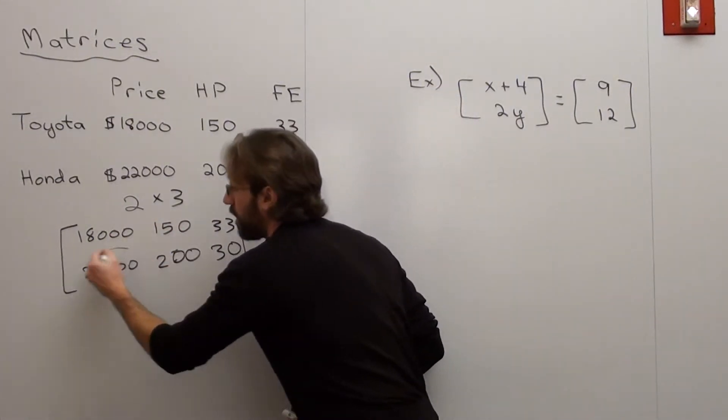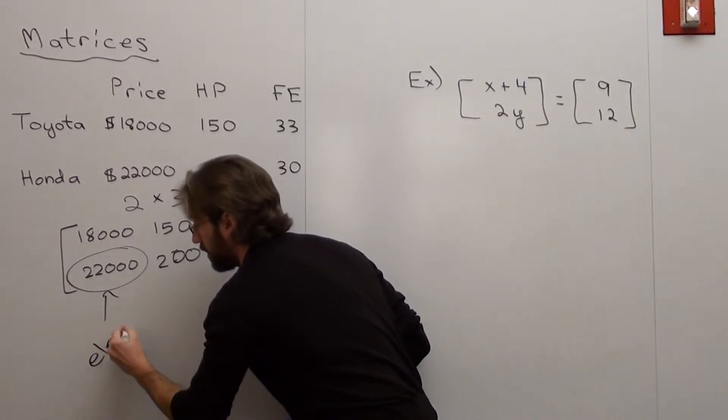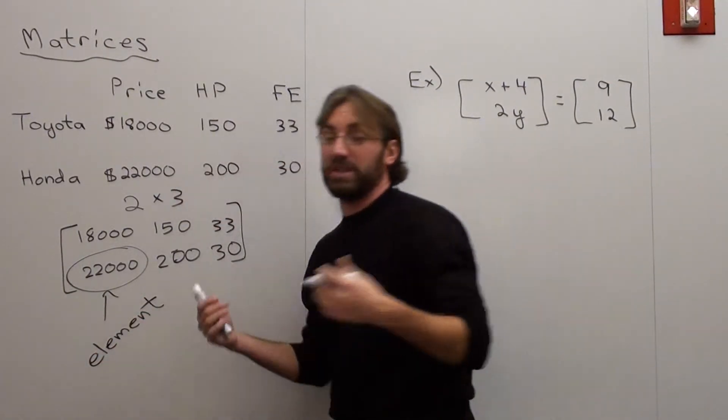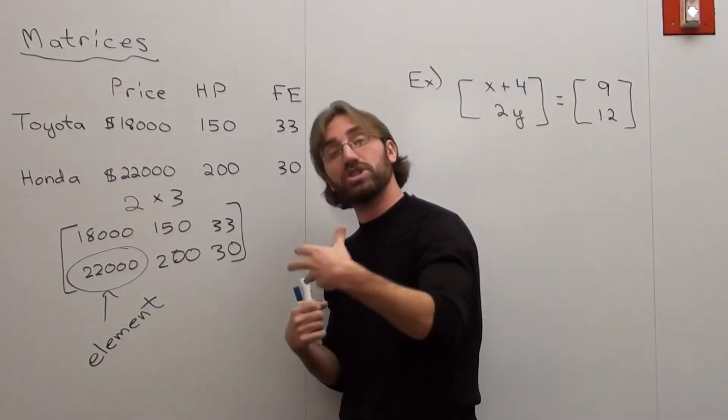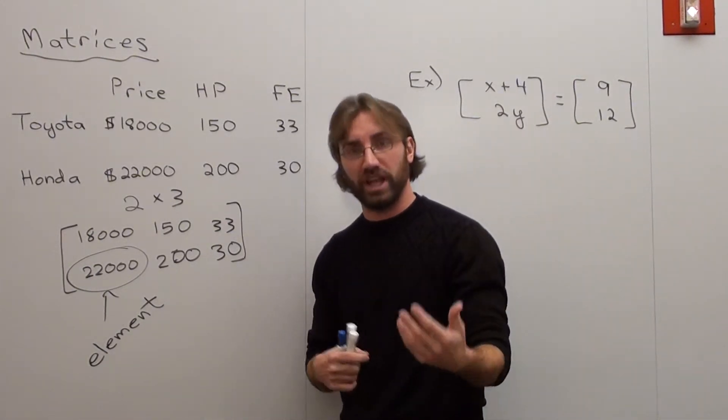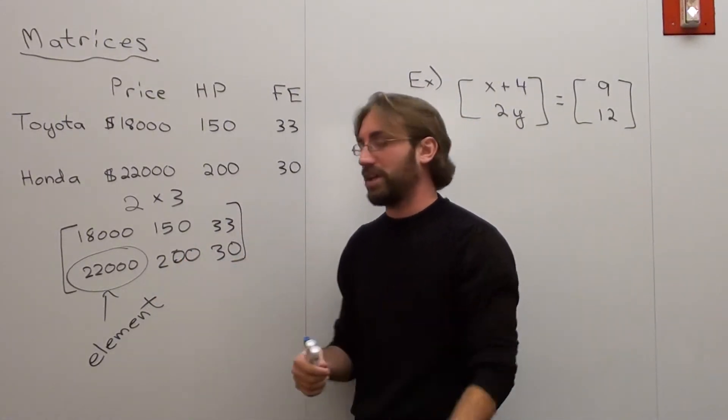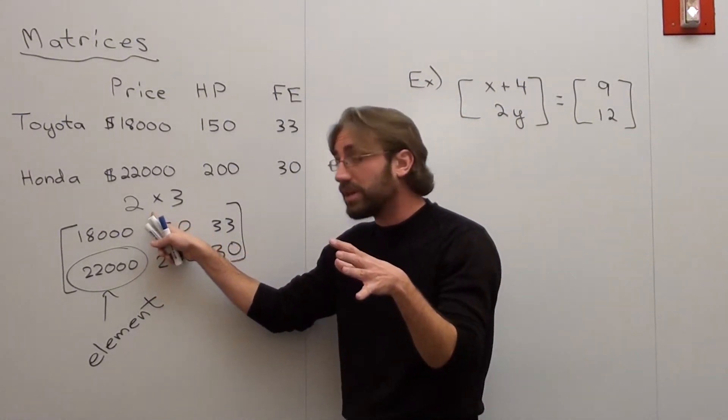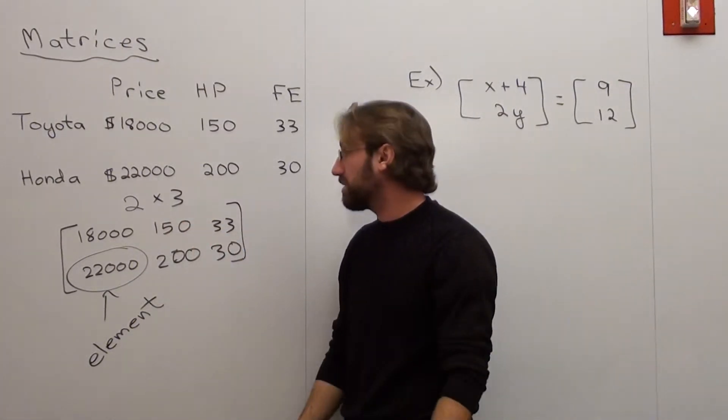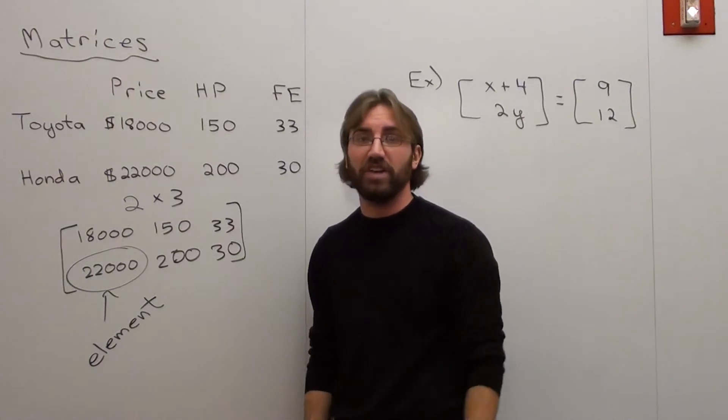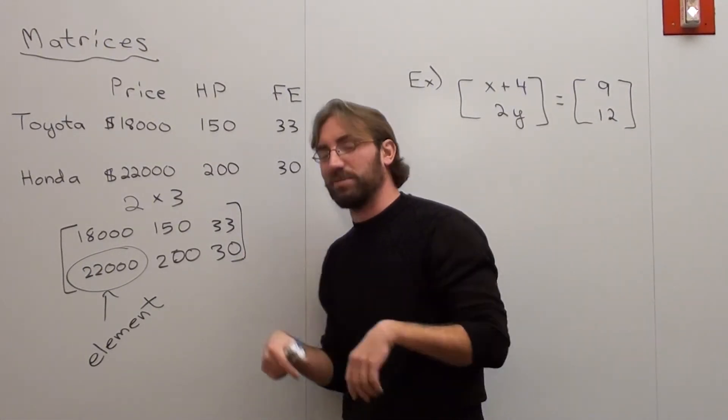So each one is a row. Each number itself is called an element of a matrix. And that's pretty much all you really need to know in order to first understand how to do a matrix. You have to know what the element is, what the dimension of a matrix is. So the dimension is two by three. Each element, there's six elements. That's pretty much it. Nothing terribly fascinating about that. But it's really cool when you really start to work with meat and potatoes.